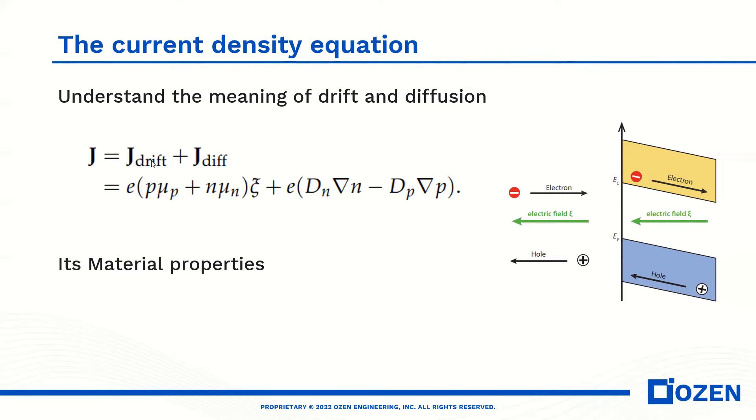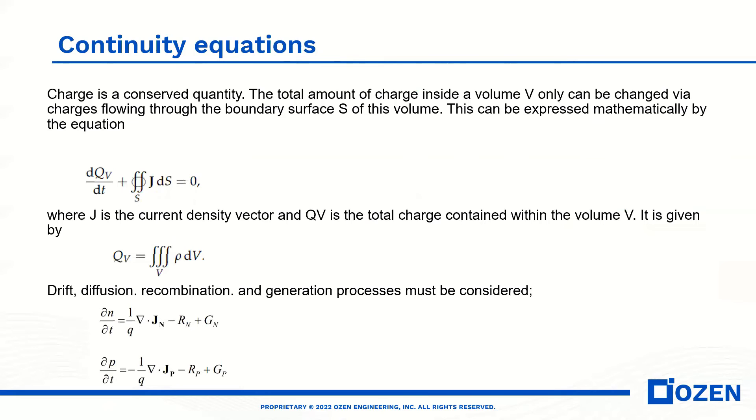The drift current depends on the electric field as you see here, and mu n and mu p is the mobility of electrons and holes. The second part is the diffusion. The diffusion depends on the non-uniform distribution of holes and electrons. It's a material property and with this equation we can calculate the current density.